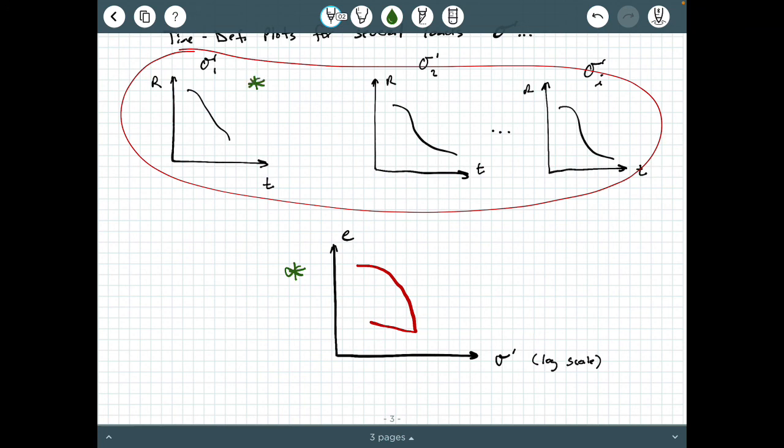This is the general procedure of how to develop a void ratio versus effective stress plot from several time deformation plots. Each one of these E values comes from step five where you iterated. This would be E1, maybe E2, maybe E3 from all those iterations. That's it in a nutshell, and we will do an Excel example at some point together where we develop one of these from scratch. This will conclude this video.